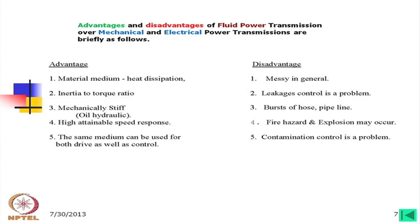Apart from that, in case of mineral oil, there is a fire hazard and explosion may also occur. The fifth disadvantage is that contamination control is a problem because some part of the fluid power system is exposed to air, which brings dirt inside, and cleaning this becomes a problem. There are many other minor disadvantages and advantages as well.